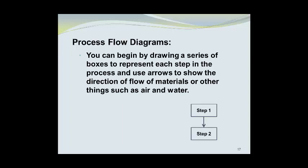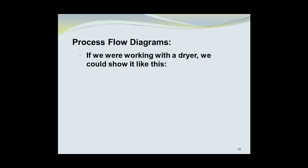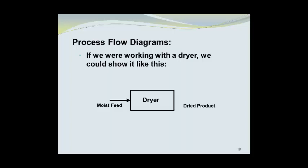You can begin by drawing a series of boxes to represent each step and use arrows to show the direction of flow of materials or other things such as air and water. If we were working with a dryer, we could simply draw a box labeled as a dryer. Moist feed enters via an arrow on the left, dried product exits on the right, and heated air enters the dryer causing evaporation of moisture, which leaves as water vapor indicated by an arrow at the top of the box.